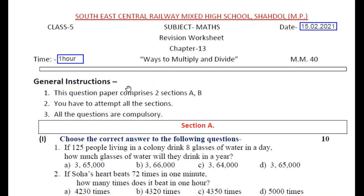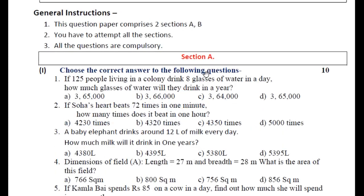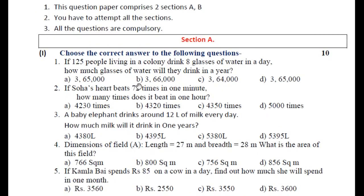So students, this question paper comprises two sections, A and B, and you have to attempt all the sections. All questions are compulsory — that means there is no internal option in this question paper. Section A में आपके objective type questions होंगे, जिसमें first question होगा choose the correct option, second fill up, and third true/false.